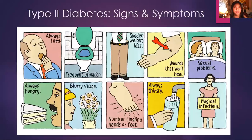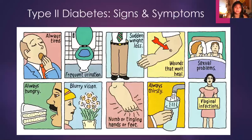Here are signs and symptoms of type 2 diabetes. Your patient may feel tired or lethargic even without strenuous activity. They tend to experience frequent urination — polyuria — sudden weight loss, wounds that won't heal due to poor wound healing, sexual problems, always feeling hungry, blurry vision as a sign of neuropathy, numbness or tingling of the hands or feet or any distal surfaces, always feeling thirsty, and vaginal infections. These are all signs and symptoms of type 2 diabetes.